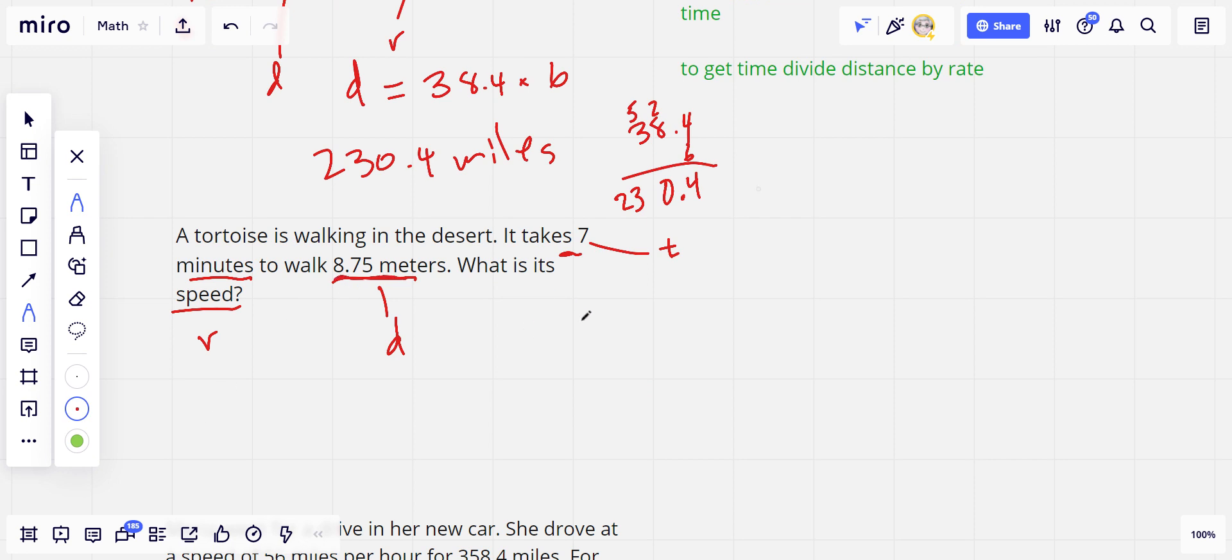Our distance here is meters. So we're going to have meters per, and in this case, the time unit is minute. So meters per minute. So that's going to be distance divided by time, or meters divided by minutes.